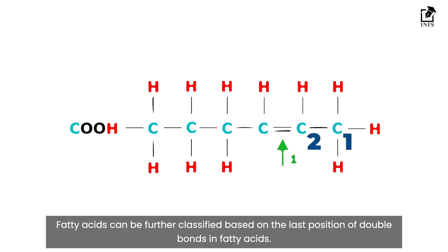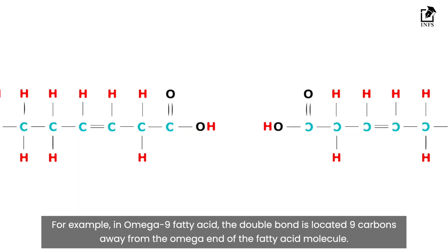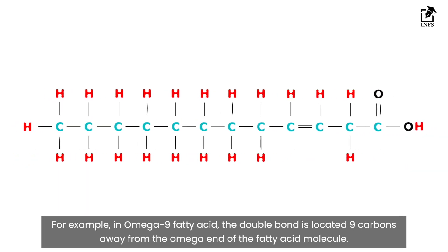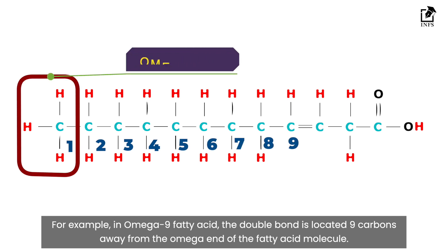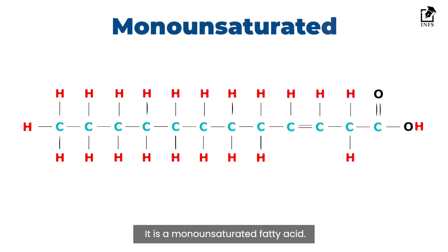Fatty acids can be further classified based on the last position of double bonds in fatty acids. For example, in omega-9 fatty acid, the double bond is located 9 carbons away from the omega end of the fatty acid molecule. It is a monounsaturated fatty acid.